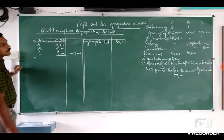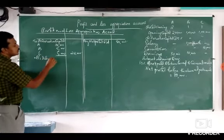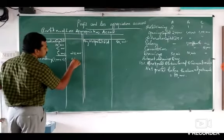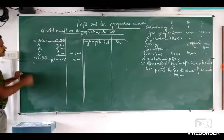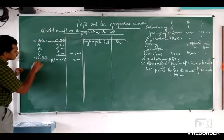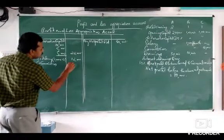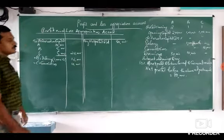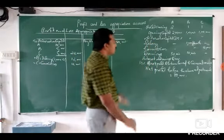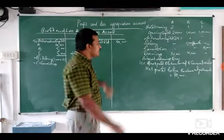Next item is salary. Whose salary? B's salary. How much? 1,000 rupees per month, so 1,000 into 12 equals 12,000. Then next is commission. Whose commission? C's commission. The commission amount is directly given as 10,000. So 10,000 for C. So we have taken interest on capital, salary, and commission — this much is covered. Drawings cannot be written here as they are a deduction from capital.